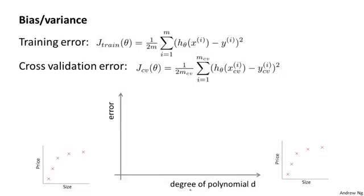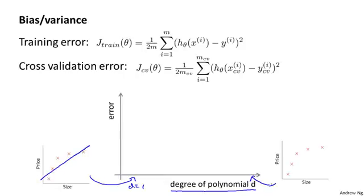Now let's plot the following figure. On the horizontal axis I'm going to plot the degree of the polynomial, so as I go to the right I'm fitting higher and higher order polynomials. Way on the left, where d equals one, I'm fitting very simple functions. Way on the right, with much larger values of d, that corresponds to fitting much more complex functions to your training set.